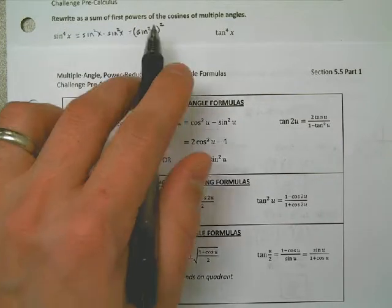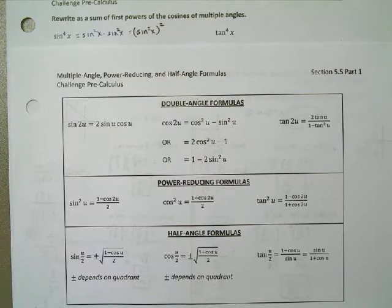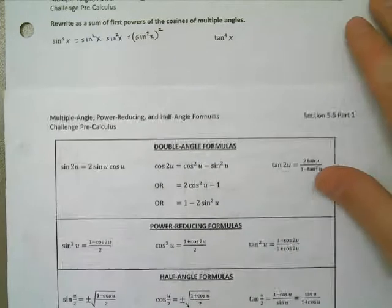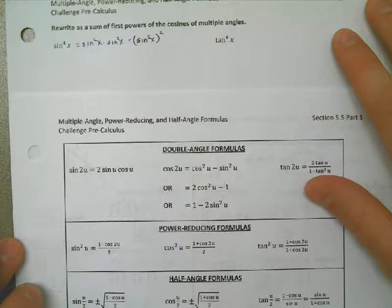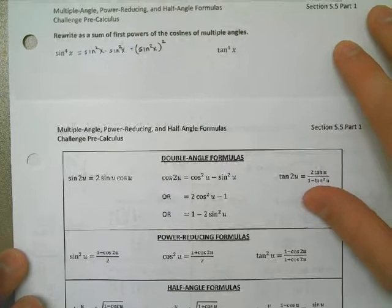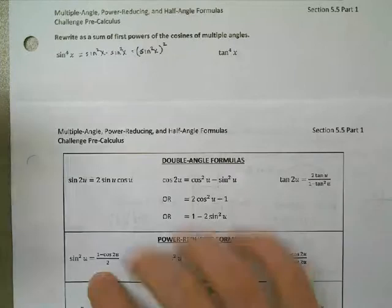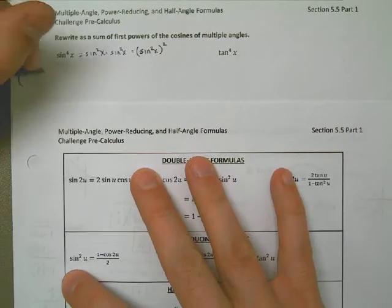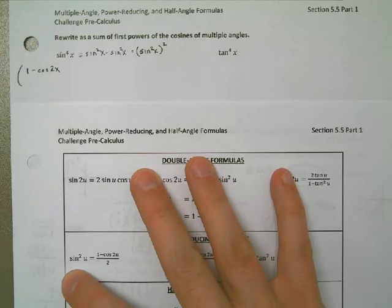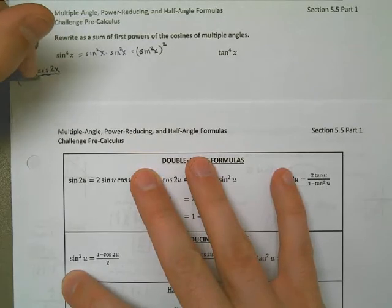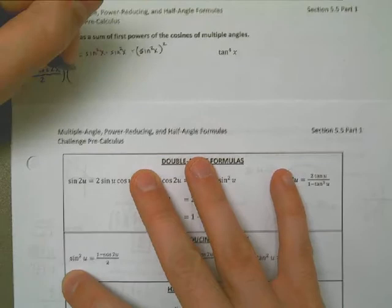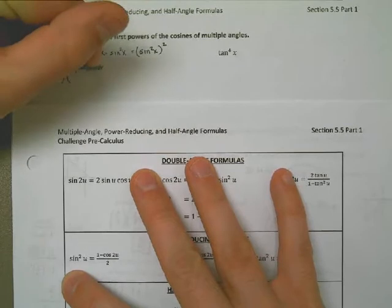So with that in mind, that means that I can rewrite this as - notice I'm going to write kind of small, and I've got to write off to the side because I really did run out of room. Sine squared of u is equal to 1 minus the cosine of, now, 2x. I doubled the angle. I doubled the angle from x to 2x. That's all over 2. I'm going to take it times itself: 1 minus cosine of 2x all over 2.